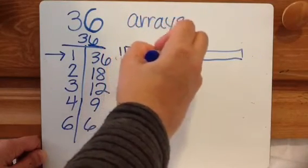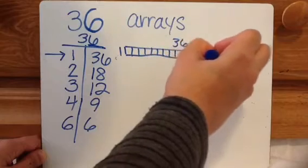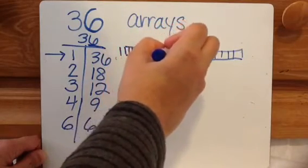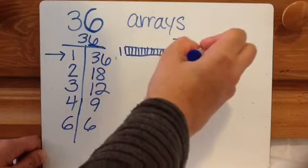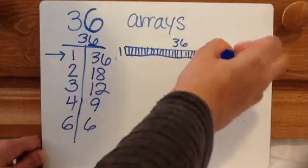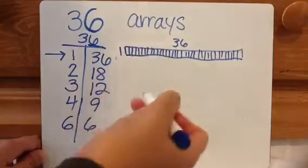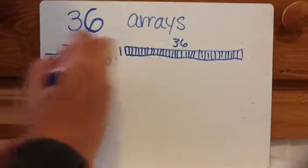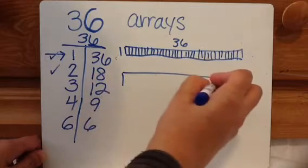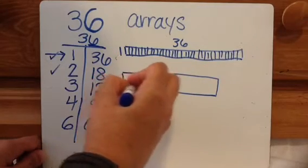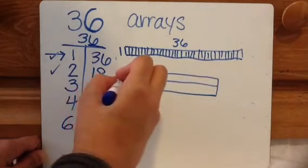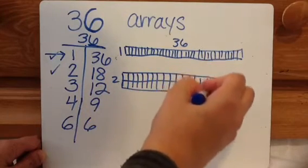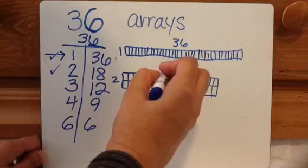So for the one by thirty-six, you count out thirty-six squares in a single row — when you have thirty-five lines, then you have thirty-six squares. So that one's done. Now I'm going to make a two by eighteen.